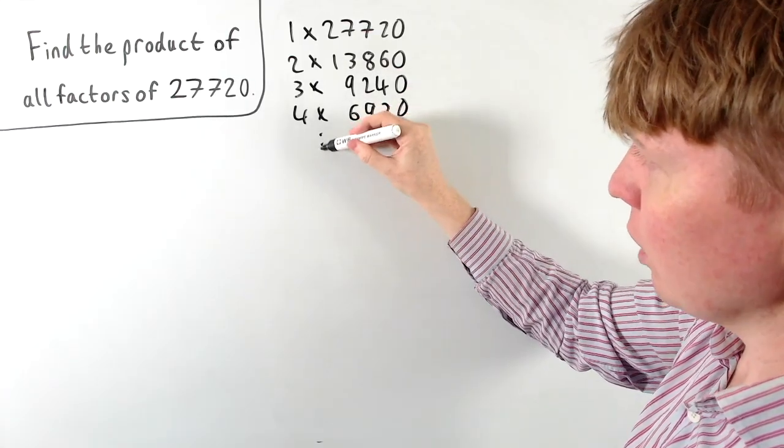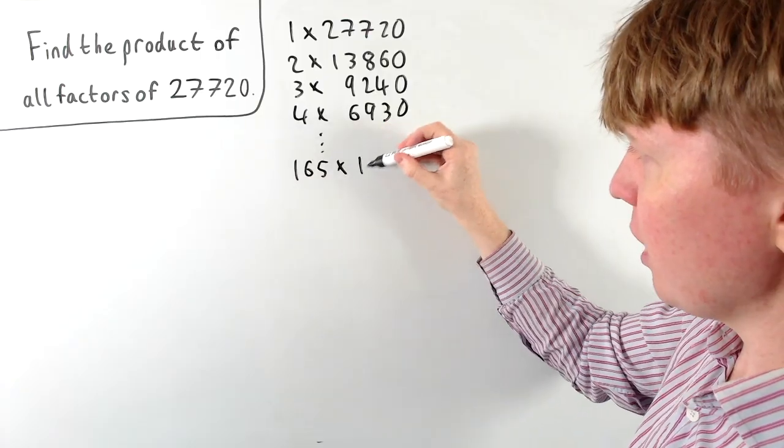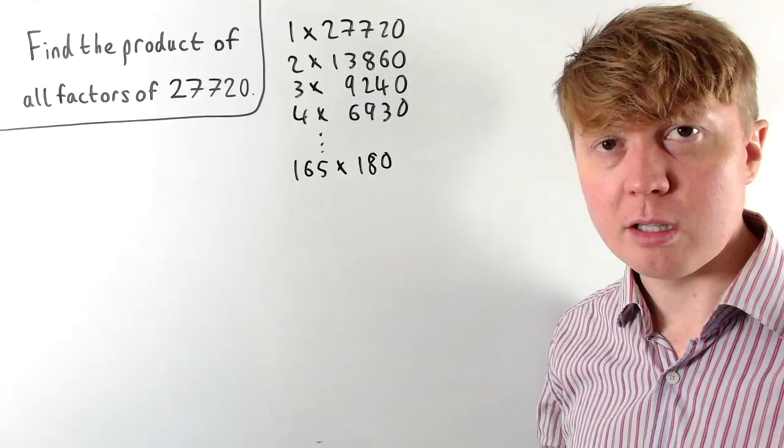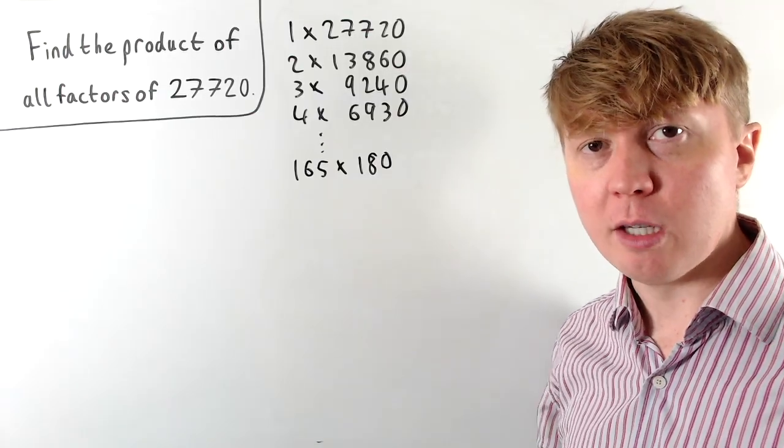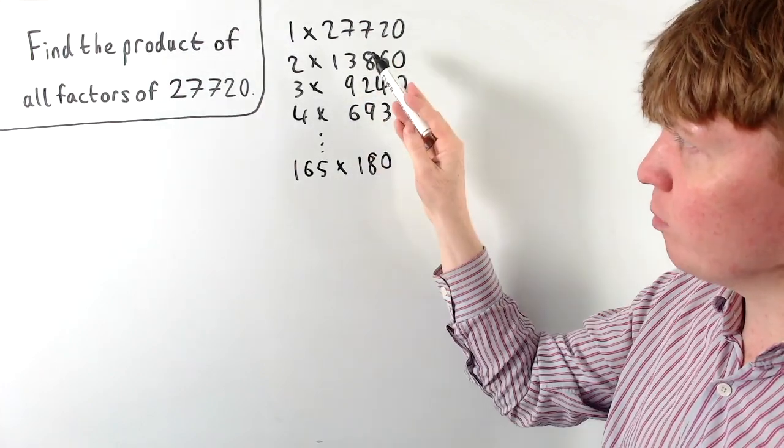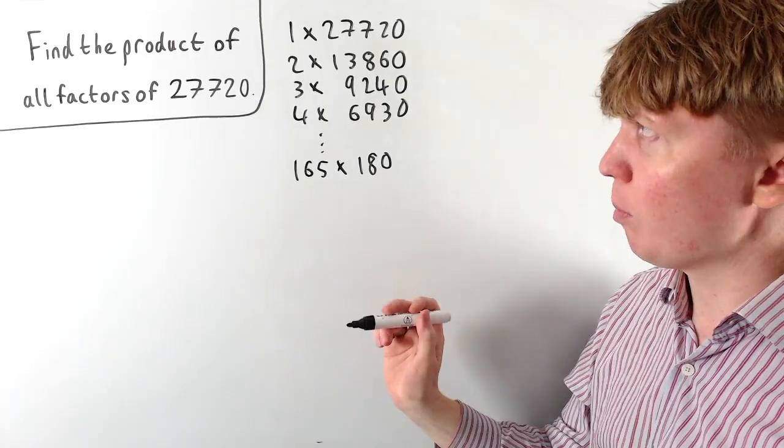But even this is quite long, so we'd have to go all the way down to 165 times 180. And then the next factor, the next number which goes into this after 165, would actually be 180, at which point we start to repeat ourselves. So if we found a nice way of multiplying all of these together, this would be really helpful towards solving our problem.